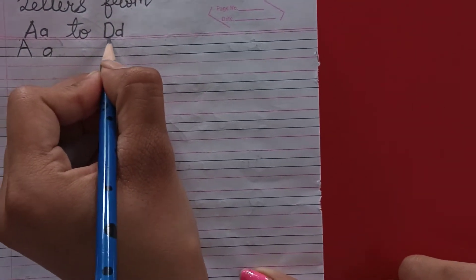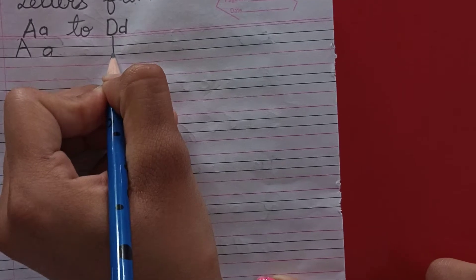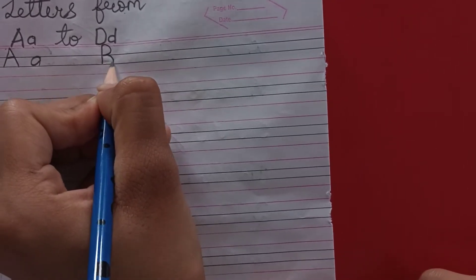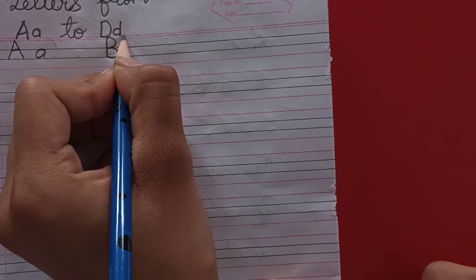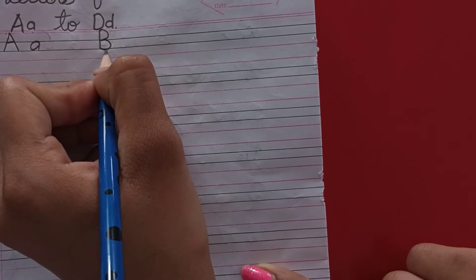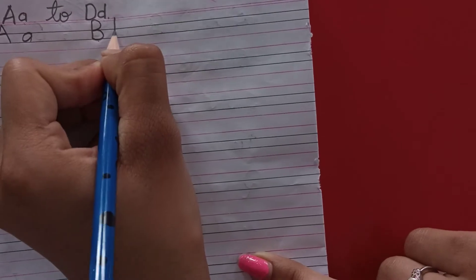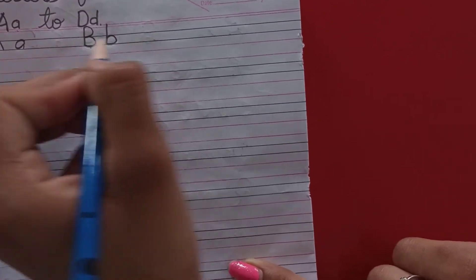B, capital letter B. B for ball. B for bat. Now, we will write small letter B. B for box.